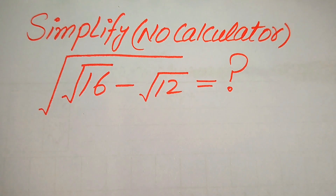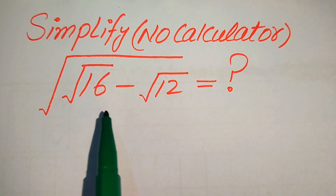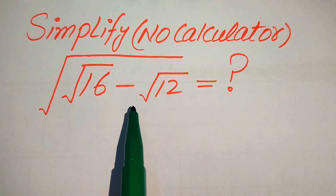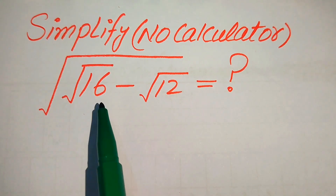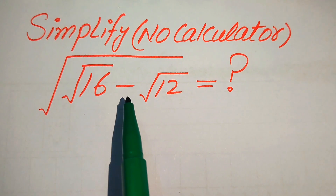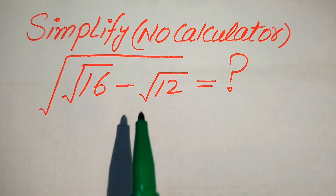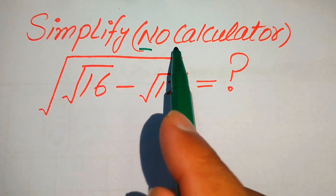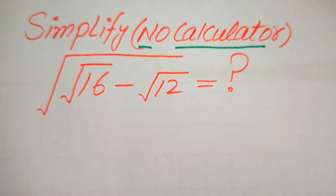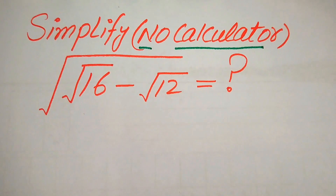Hello everyone. How to simplify this algebraic expression: the square root of 16 minus the square root of 12, all under a whole square root. We will write this expression in simplified form without using a calculator — the calculator is not allowed in this problem, so we need to show all of the working on paper.